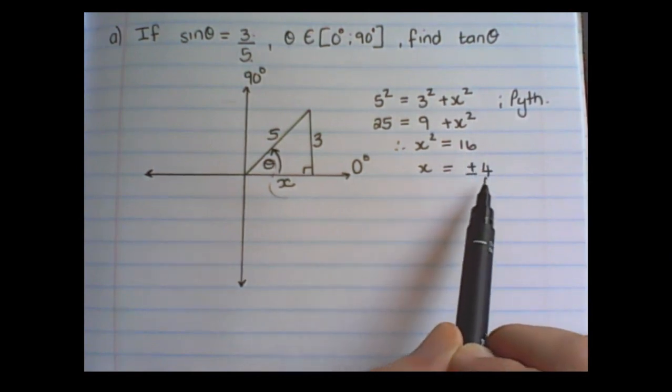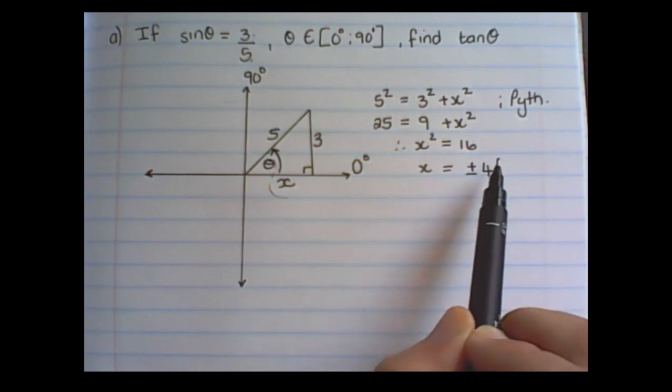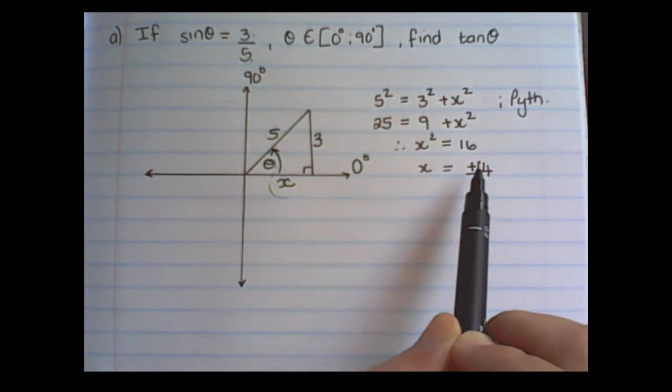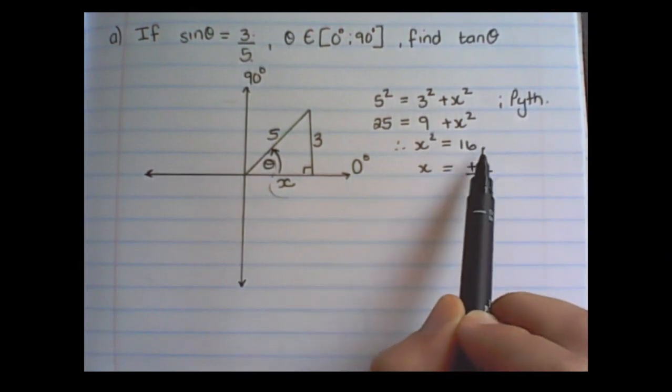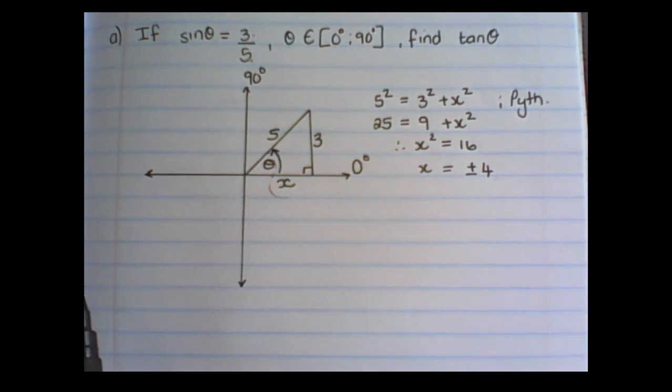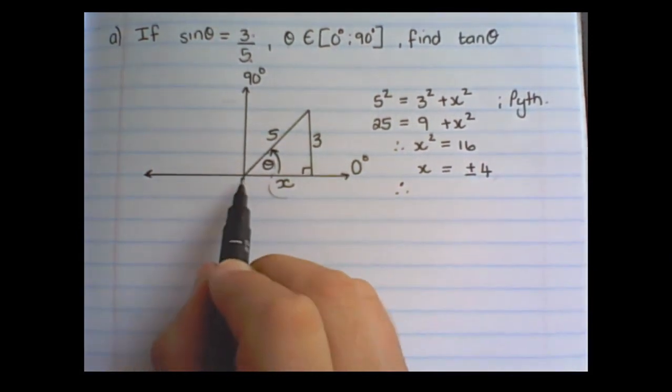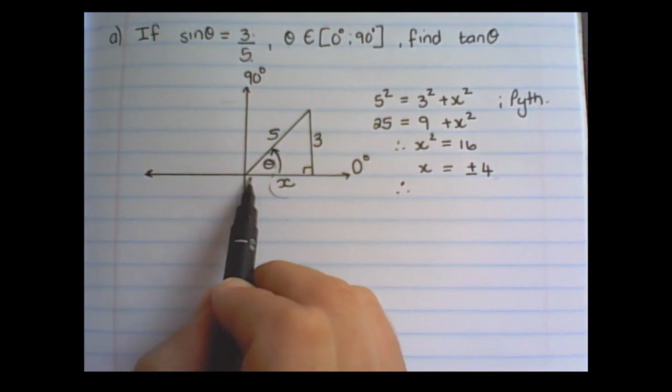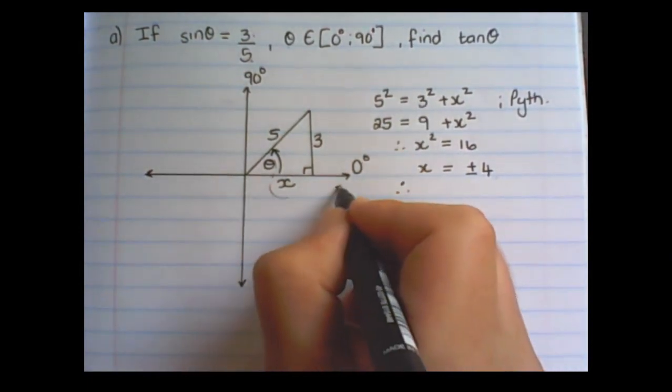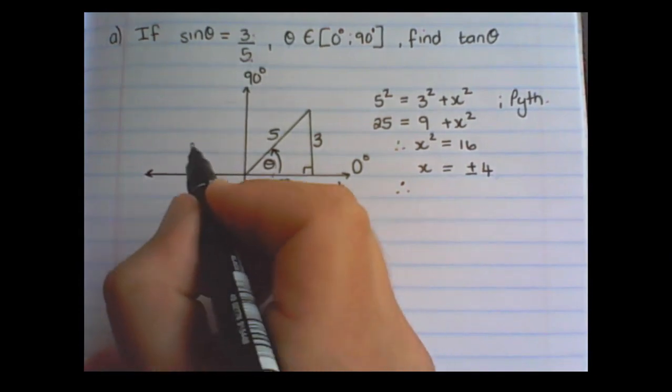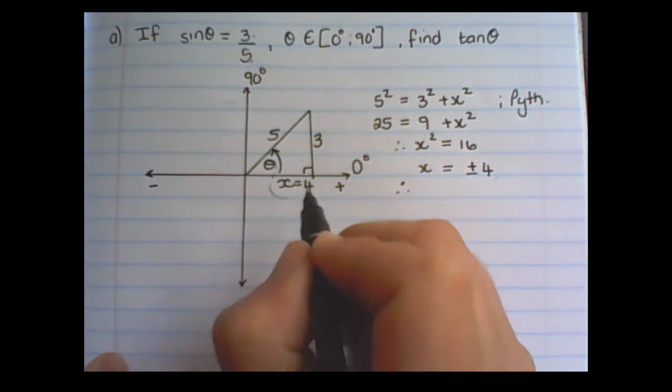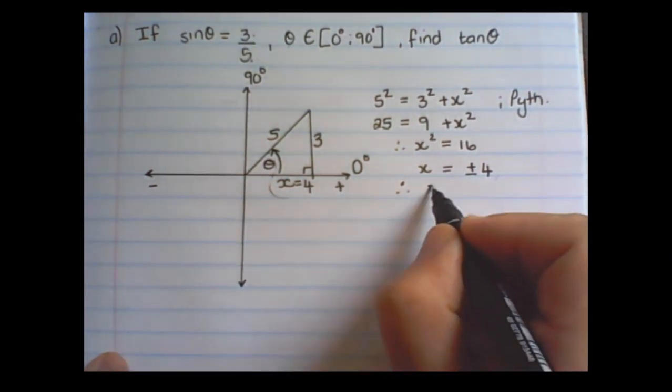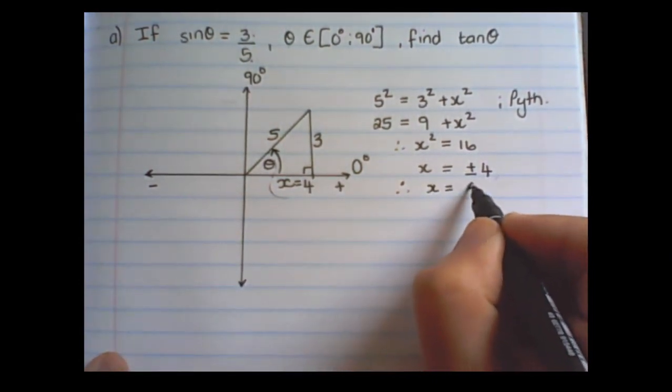The reason why it is 2 values is because if x is 4 and I square 4, I'll get 16. And if x is negative 4 and I square negative 4, it'll also give me 16. Now the value that is true for this diagram, we can see that x is positive. These values towards the right are positive, and these values are negative. But this length then is equal to positive 4. So x is equal to plus 4.